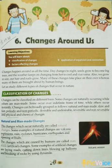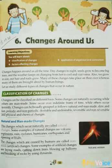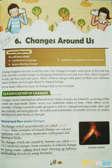Changes can be classified on different bases. The first one is natural and manmade changes. The changes which occur naturally are called natural changes. For example, volcanic explosions, rain, cyclones, hurricanes, earthquakes, and ripening of fruits.